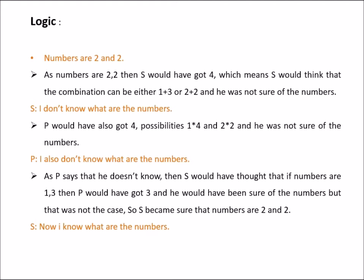And P would have also got 4, that is 2 into 2, the product of 2 and 2 is 4. So the possibilities are 1 into 4 or 2 into 2. So he was not sure of the numbers. And P also says that I also don't know what are the numbers.